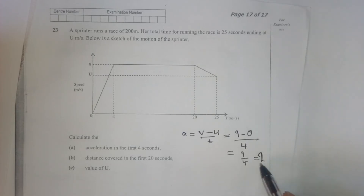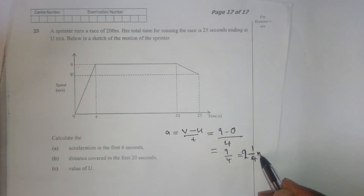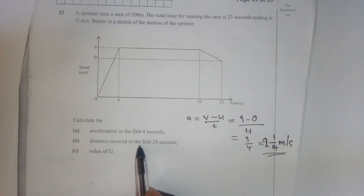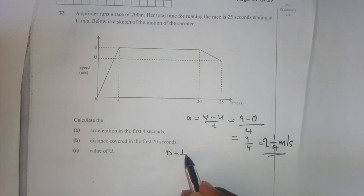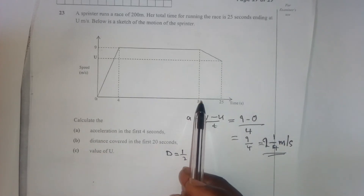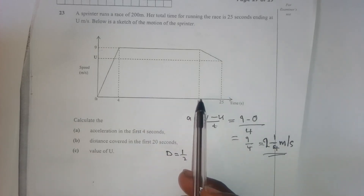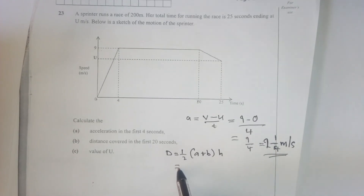Solving: nine divided by four gives two and a quarter meters per second squared. That is our answer for part one. For part two, we find the distance covered in the first 20 seconds. The shape formed is a trapezium, so we use the area of a trapezium formula: distance equals one over two times the sum of parallel sides times height.